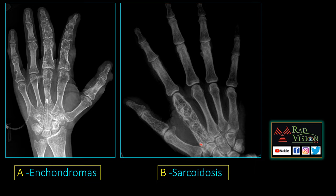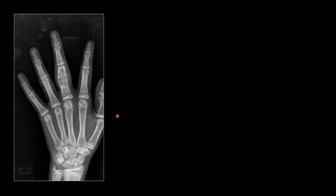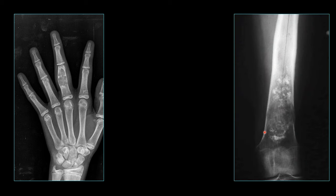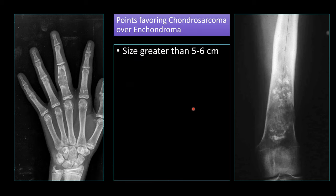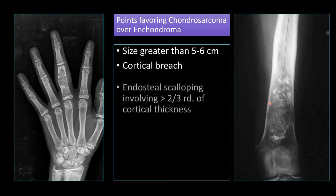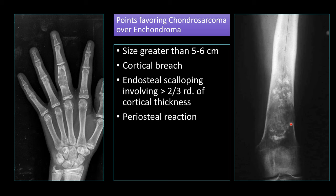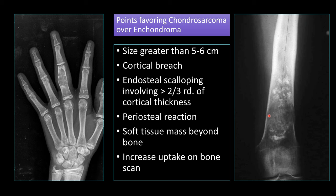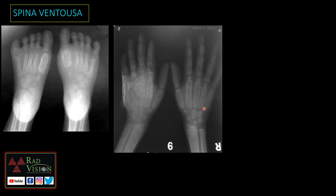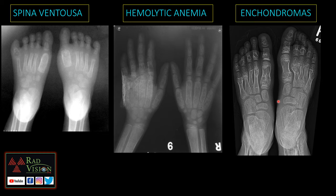Another companion case shows a larger lesion with multiple rings and dots of calcifications, endosteal scalloping, and cortical breach — this favors chondrosarcoma over enchondroma. Points favoring chondrosarcoma include size greater than 5–6 cm, cortical breach, endosteal scalloping involving greater than two-thirds of cortical thickness, periosteal reaction, soft tissue mass beyond bone, and increased uptake on bone scan. Other differentials for expansion of short tubular bones include spina ventosa, thalassemia or hemolytic anemia.